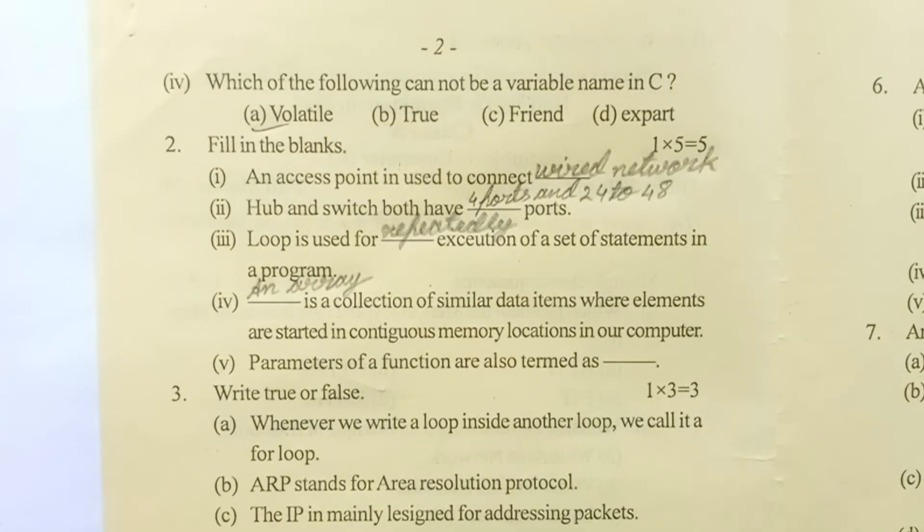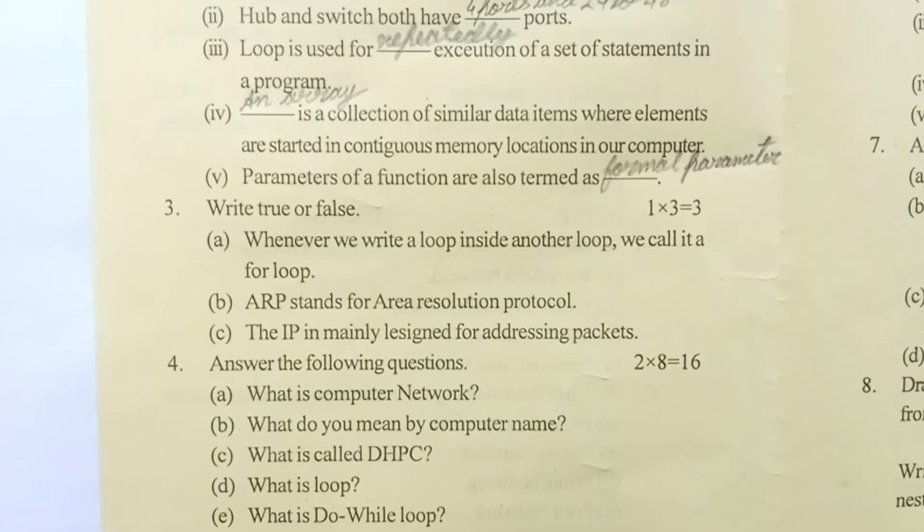Question number three: write true or false. Question A: whenever we write a loop inside another loop, we call it a for loop. Answer will be false. Question B: ARP stands for Area Resolution Protocol. Answer will be false.